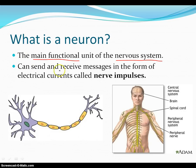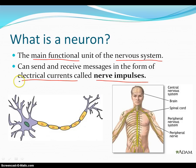It has the ability to send and receive messages in the form of electrical currents called nerve impulses. Kind of interesting to think about — your body actually has the ability to produce electrical currents. Think about your house; it works on electrical currents. So those electrical currents that work in your body are called nerve impulses.